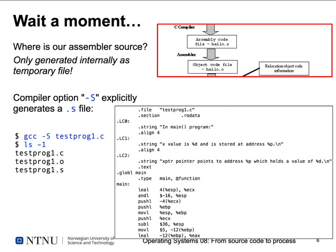If you want to see the assembler source code corresponding to your C source file, there's another GCC option: -S (S for assembler). If you call gcc -S testprog1.c and do an ls, you also have an assembler source code file testprog1.s. If you list its contents with cat or open it in an editor, you'll see an ASCII source file containing things like the file name, section names we've discussed before, strings that have been defined, and assembler commands for the x86 processor corresponding to C source code instructions.